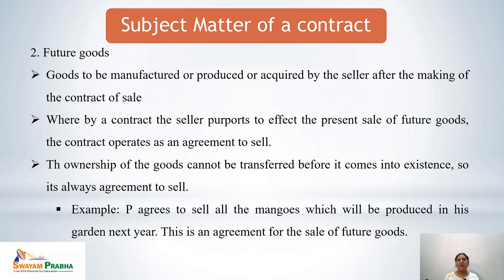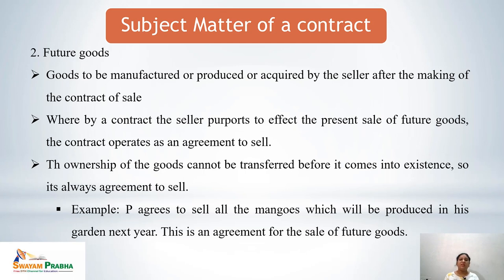The second category of goods is future goods — goods to be manufactured, produced, or acquired by the seller after making the contract of sale. When the contract was made, the goods were not available. Where a seller purports to effect a present sale of future goods, the contract operates as an agreement to sell. In case of future goods, there is always an agreement to sell, never a contract of sale. For example, P agrees to sell all the mangoes which will be produced in his garden next year — this is an agreement to sell future goods.